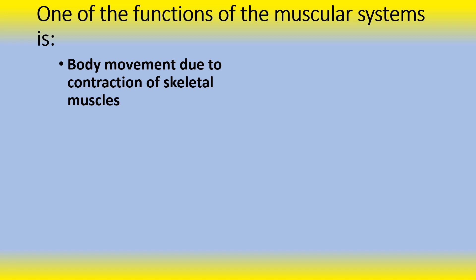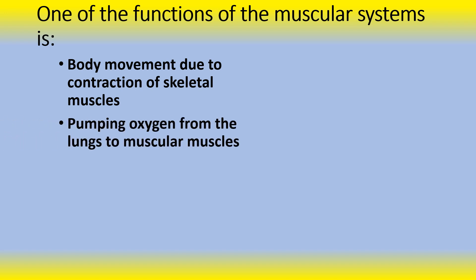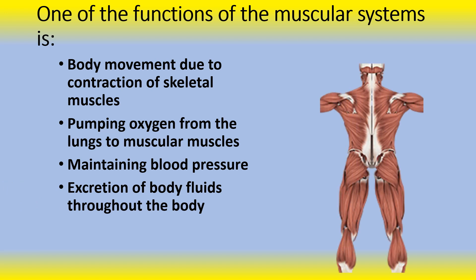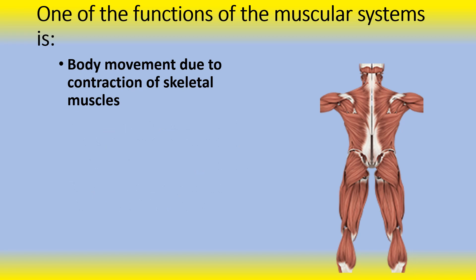Next question: One of the functions of the muscular system is the body movement due to contraction of skeletal muscles, pumping of oxygen from the lungs to muscles, maintaining blood pressure, or excretion of body fluids throughout the body? The answer is body movement due to contraction of skeletal muscles. The muscular system is an organ system consisting of cardiac muscles, skeletal muscles, and smooth muscles. It is responsible for body movement through contraction of skeletal muscles, maintaining balance and posture, and also circulating blood throughout the body.